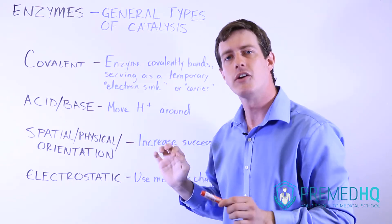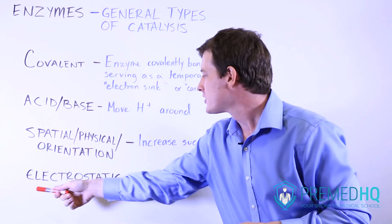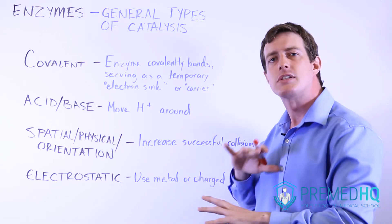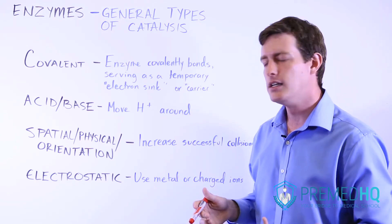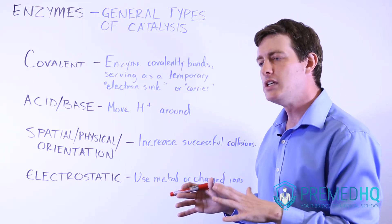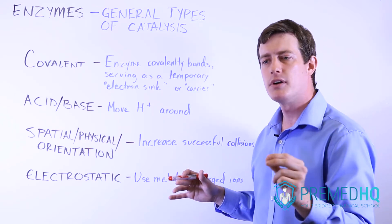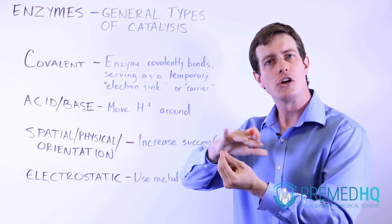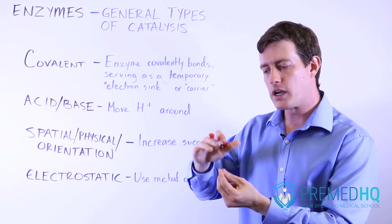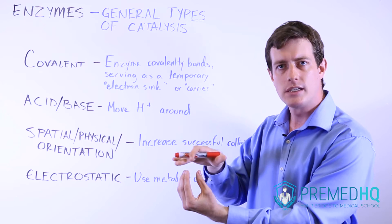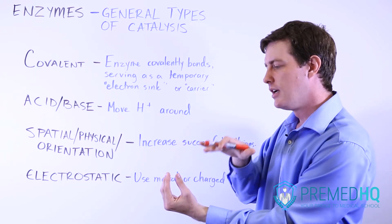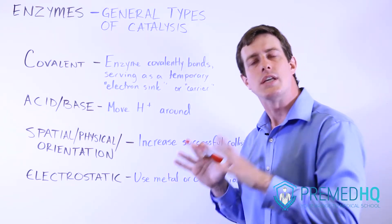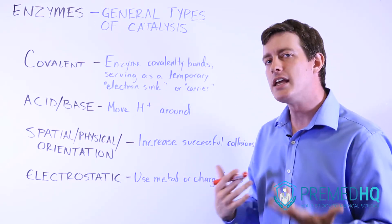The fourth type of catalysis — and an important one that can be tricky to understand — is electrostatic catalysis. Usually, though not always, this involves a metal or some other charged ion that helps stabilize another species. Many compounds in the body are negatively charged, and one useful thing to help a reaction occur is to place a potassium ion, magnesium ion, or something positively charged that can temporarily interact with that negatively charged substrate. This attractive positive force places it in the right position, making it easier to work with. So electrostatic catalysis uses metal or charged ions to stabilize a charged substrate and make the reaction easier to occur.